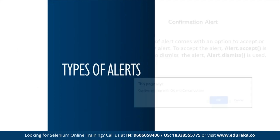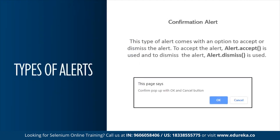Now let's move ahead and understand what is a confirmation alert. This confirmation alert asks for your permission to perform some kind of operation. Similar to the prompt alert, it provides two options — OK and cancel. After you enter the message in the text box, you can either click OK or cancel. This alert basically gets your confirmation about the action to be performed.